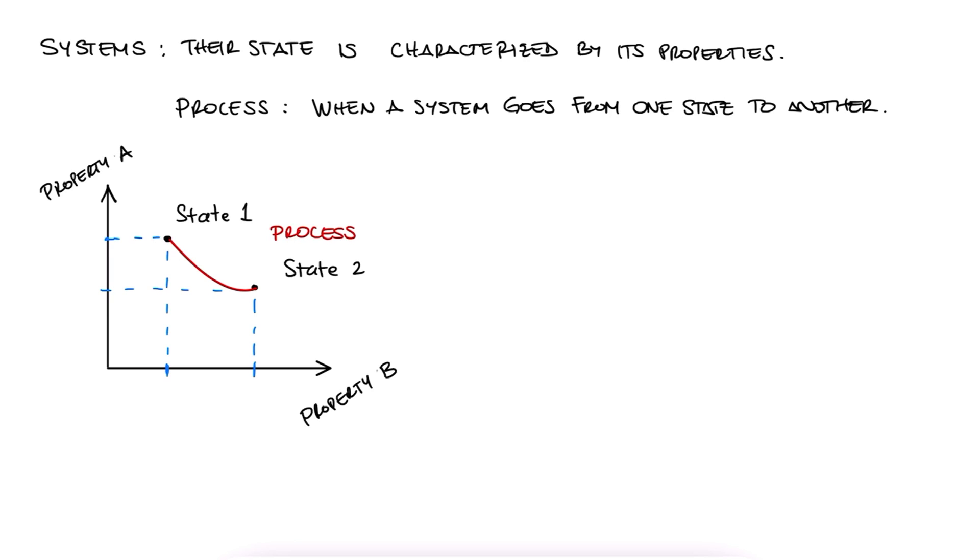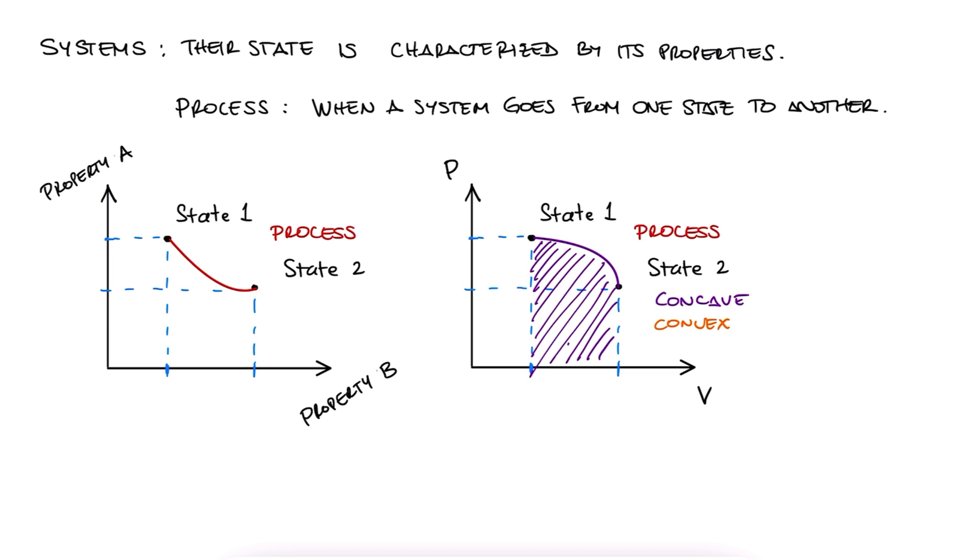Depending on the shape of this trajectory, meaning if it's curved or straight, concave or convex, we can potentially know something about the process itself. For some processes, the area under the curve is what's gonna determine quantities we're interested in, for example, work. But more on that later.